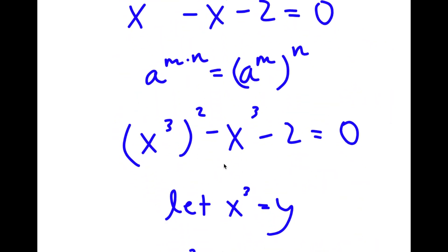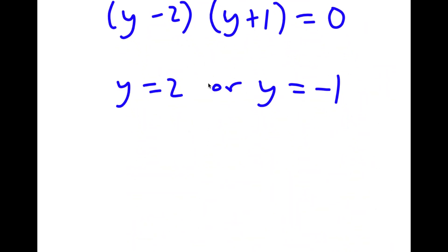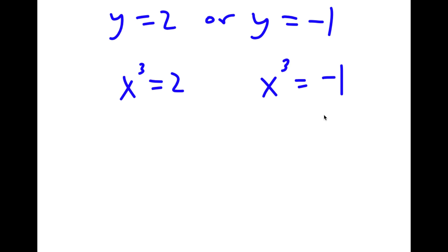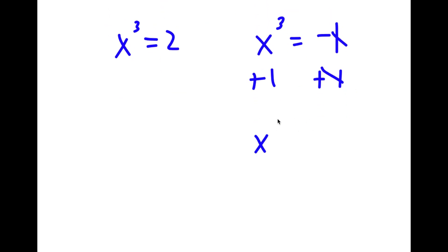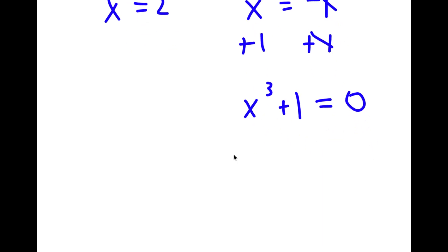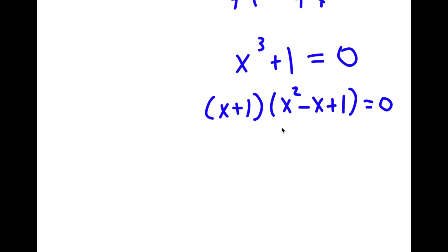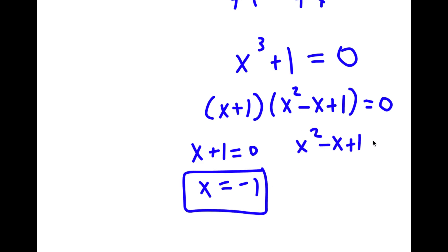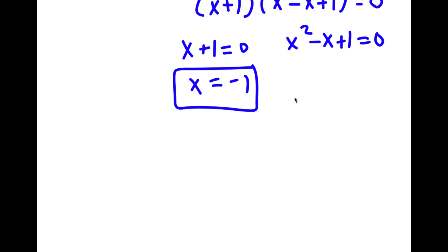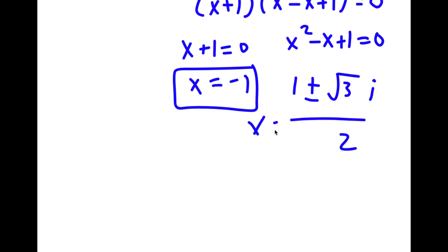Remember we set x to the power of 3 equal to y. So x cubed equals 2 and x cubed equals negative 1. For x cubed equals negative 1, I add 1 on both sides: x cubed plus 1 equals 0. This factors as (x plus 1) times (x squared minus x plus 1) equals 0. So x plus 1 equals 0, meaning x equals negative 1. And for x squared minus x plus 1 equals 0, using the quadratic formula you get x equals (1 plus or minus the square root of 3) times i, over 2. These are two more solutions.